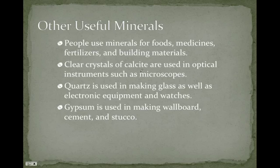We also use minerals for food, medicine, fertilizers, and building materials. With fertilizer, you're talking about sodium, potassium, and nitrogen. Clear crystals of calcite are used in optical instruments such as microscopes. Quartz is used in making glass, as well as electronic equipment and watches. And gypsum — which is actually a big one in Iowa — is used in making wallboard, cement, and stucco. So gypsum wallboard, or drywall, is made from a mineral.